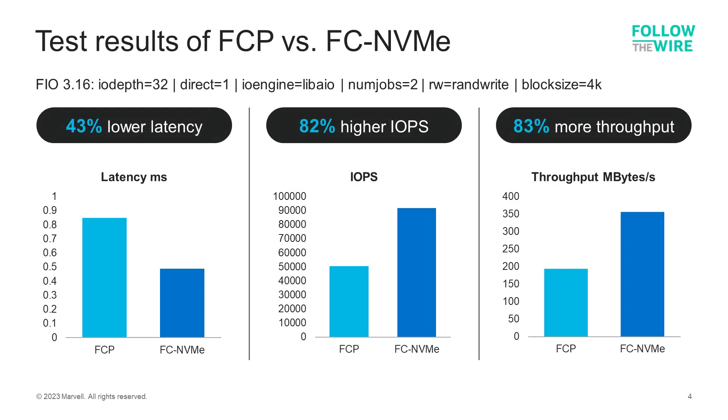So how does the SCSI-based fiber channel world of today stack up in terms of performance with the next generation FC-NVMe? Here's data from our internal testing here at Marvell. In our test, latency is reduced by 43% when using FC-NVMe. This is primarily because of the multi-queue capability and the streamlined command set that are both optimized for memory-based storage devices.